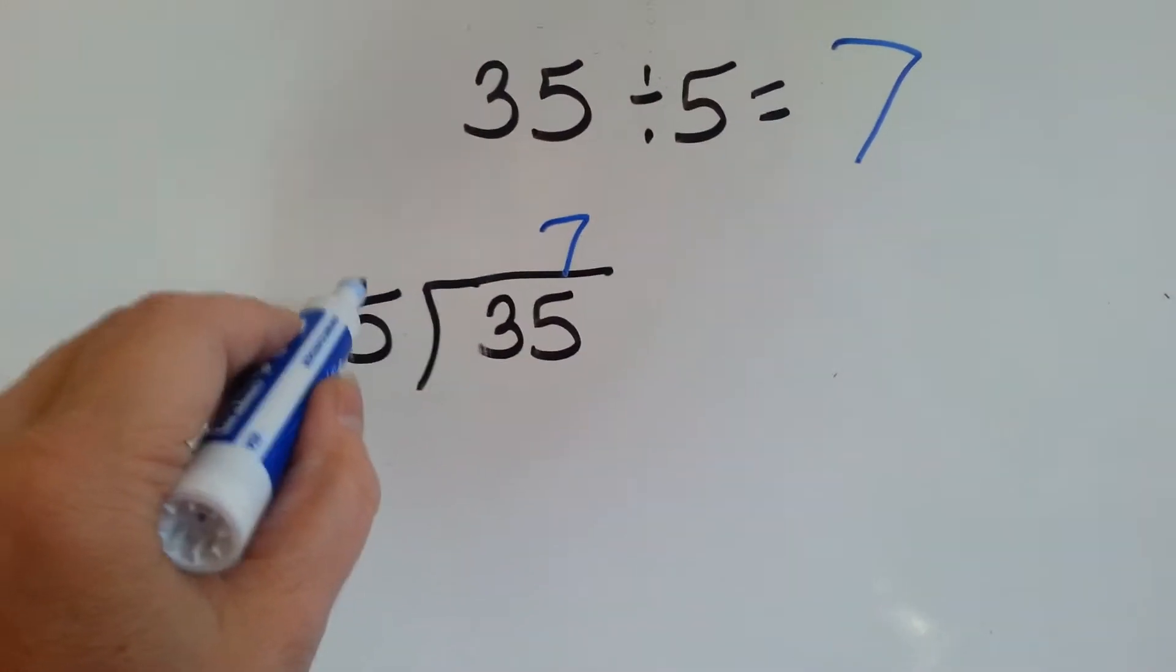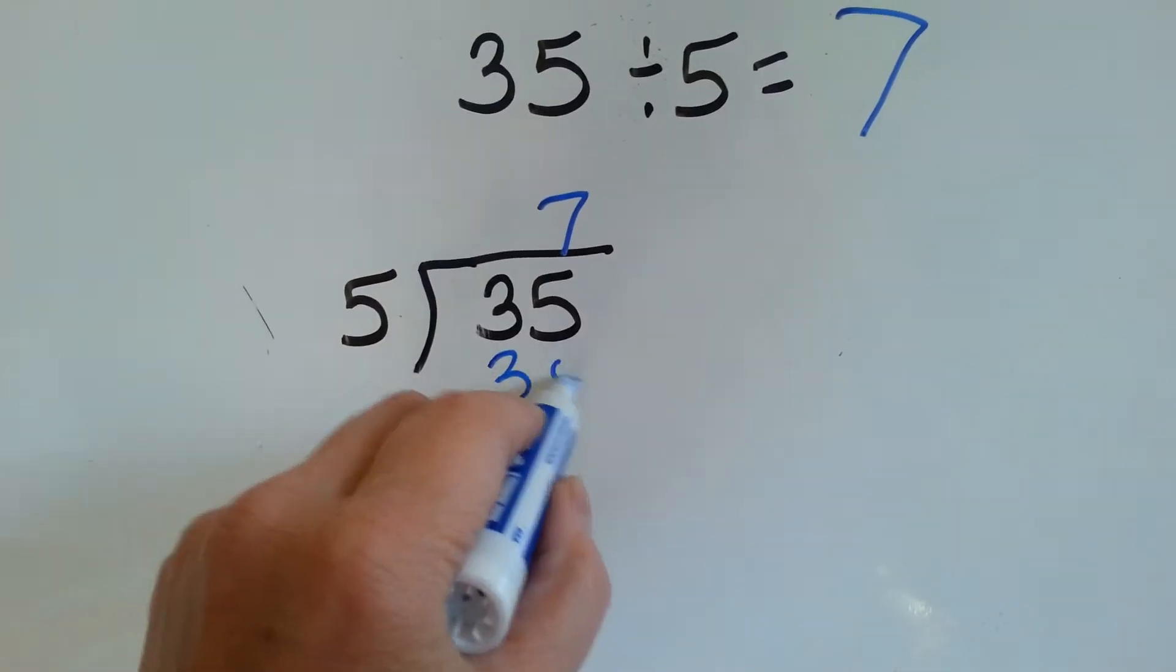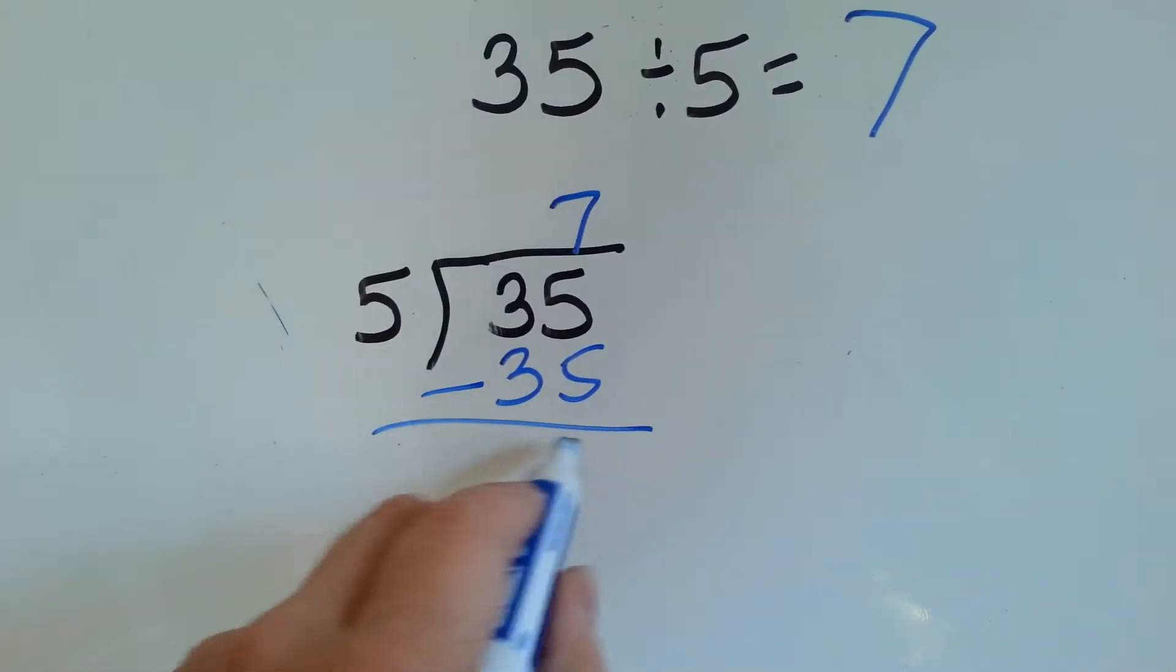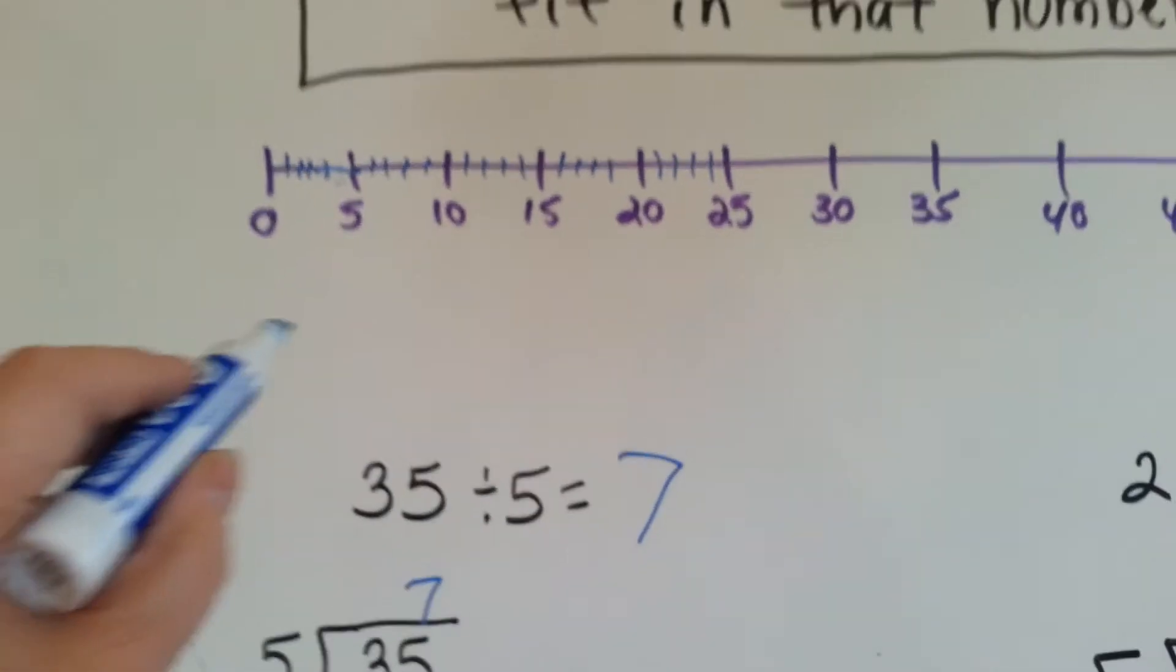Then we do our multiplication. 5 times 7 is 35. We do our subtraction. We have 0 left over.